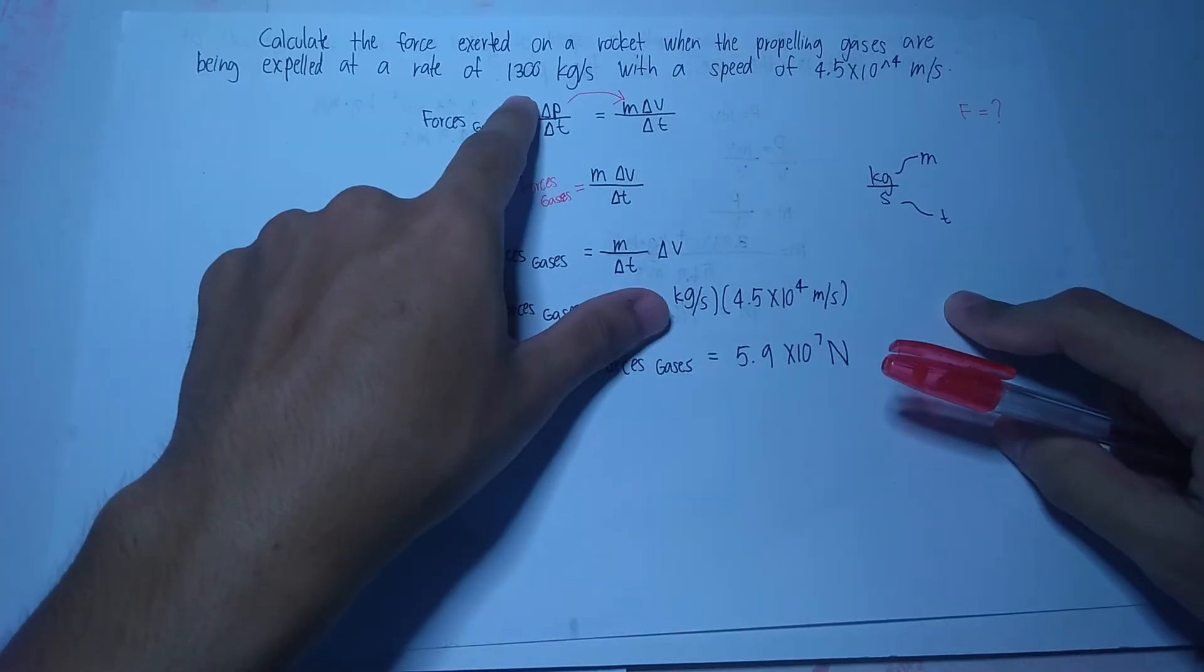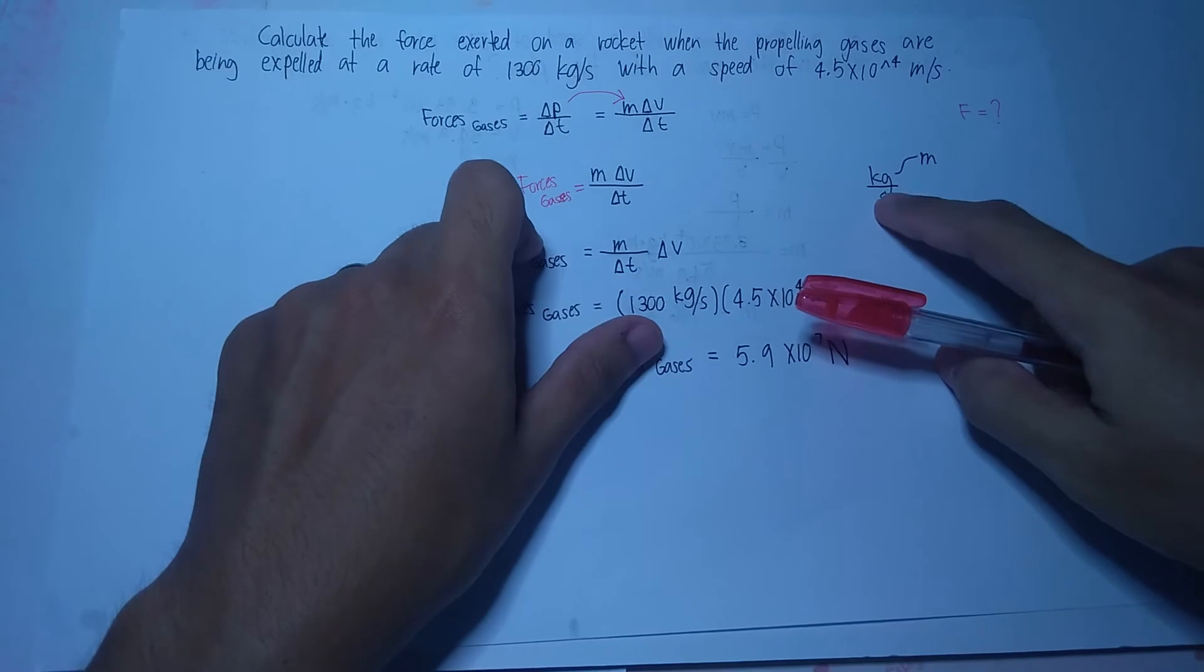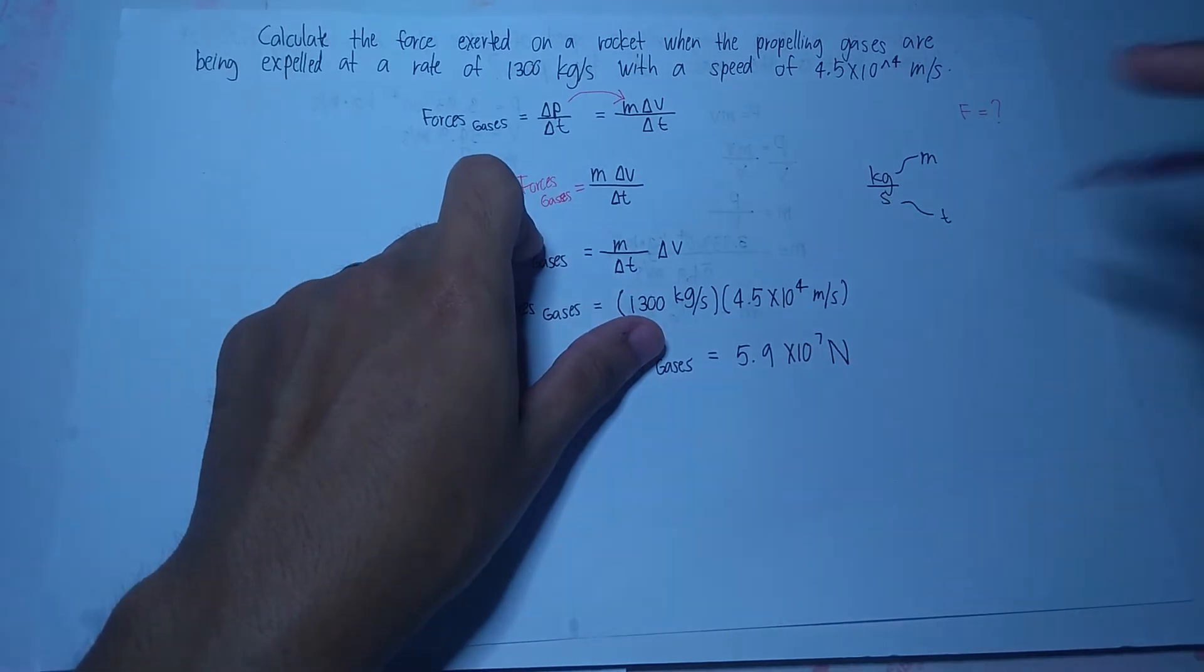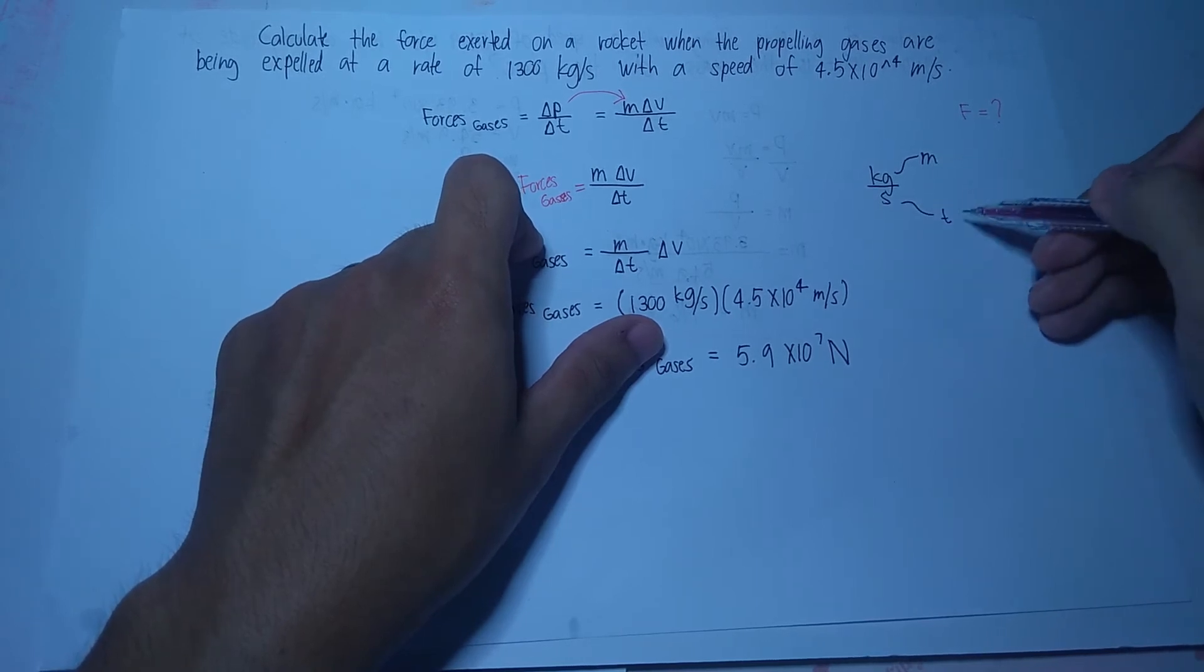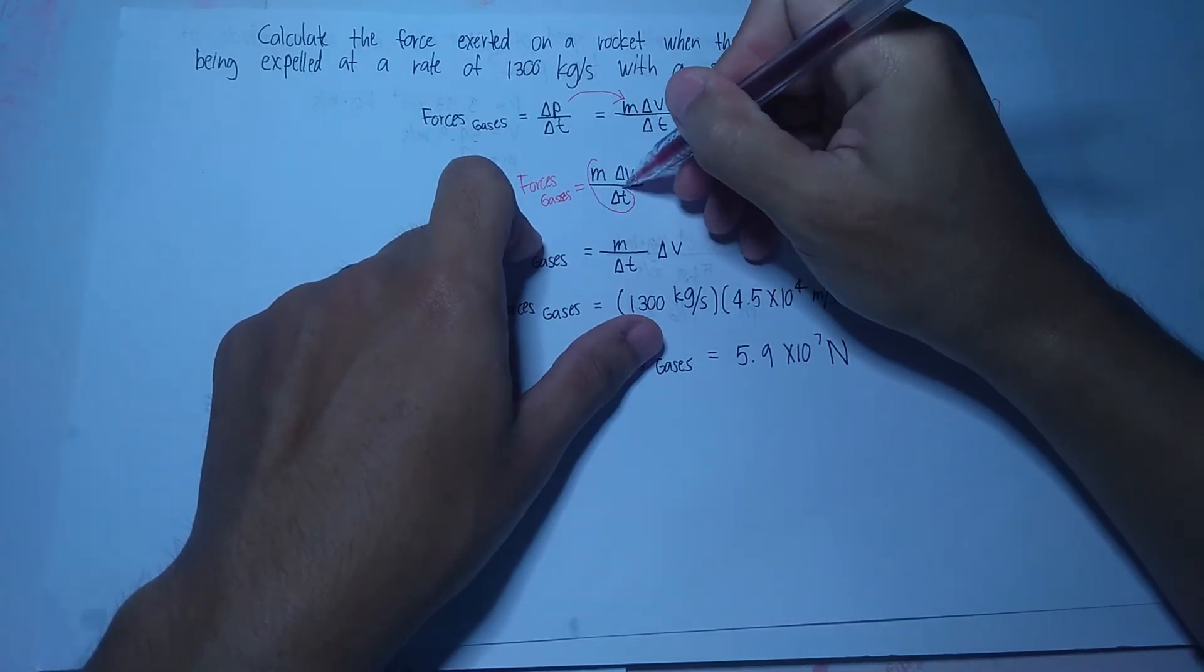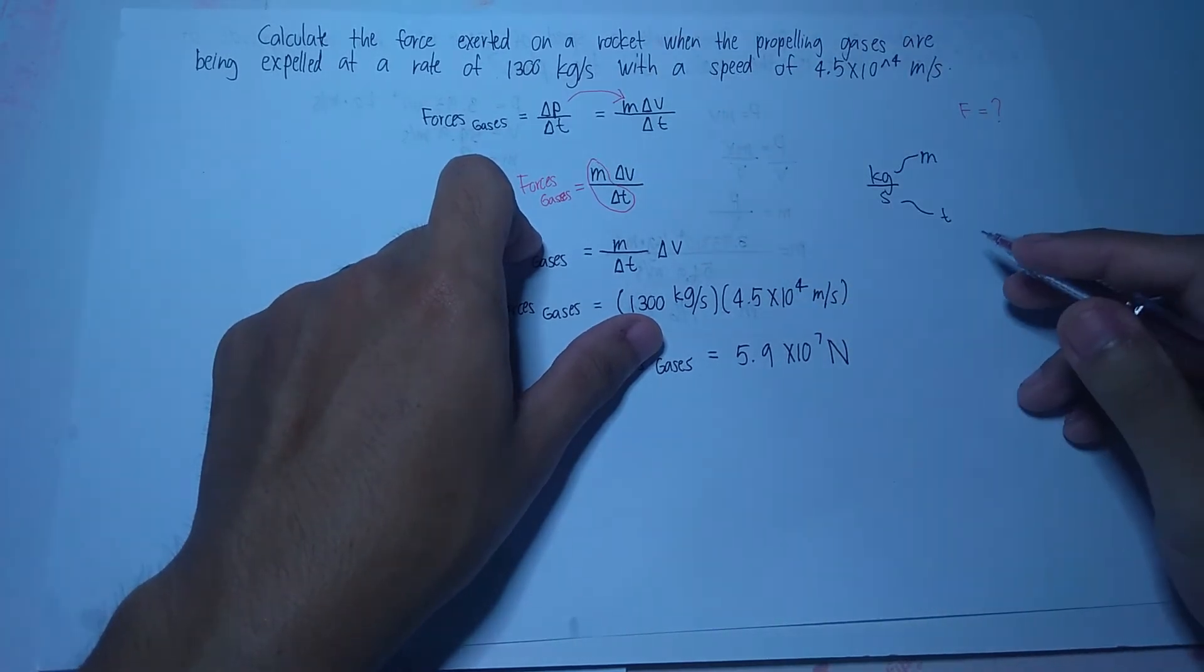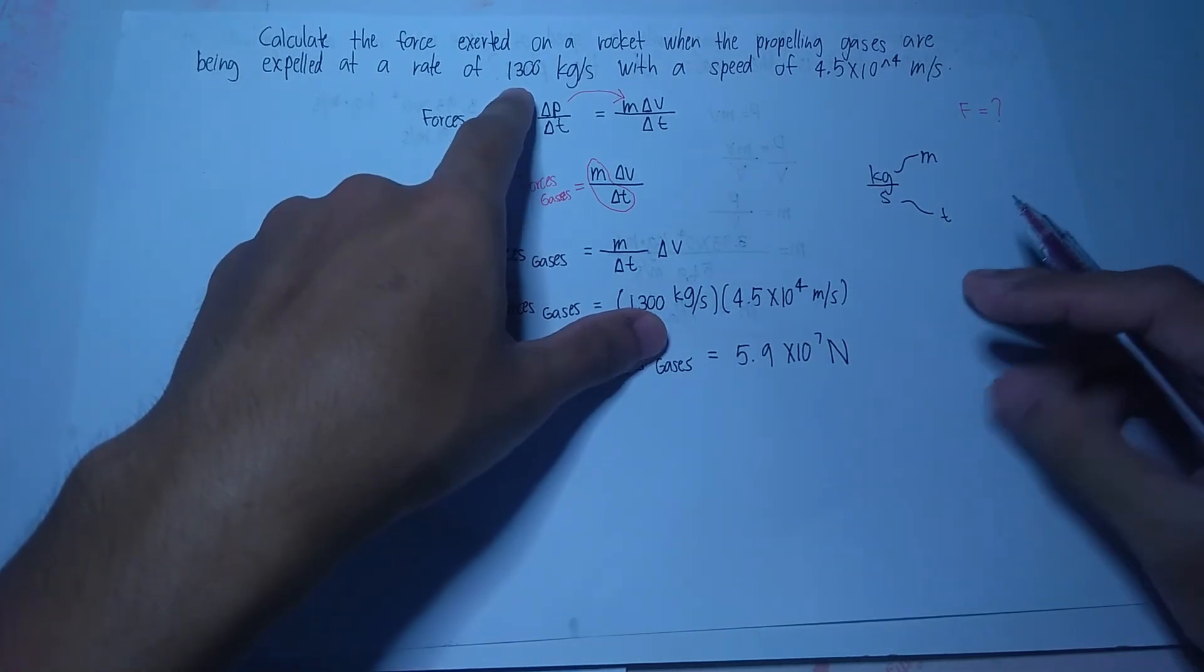At yung rate, we should take note na yung rate na to ay merong unit na kilogram over second. We know that the kilogram is a unit for mass and second as a unit of time. So therefore, itong mass at yung change in time can be substituted by the rate na 1,300 kg per second.